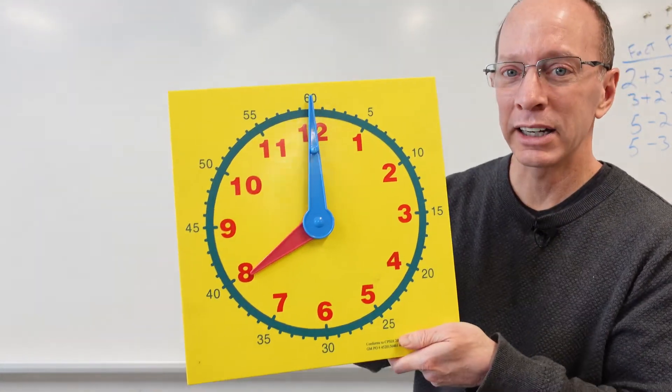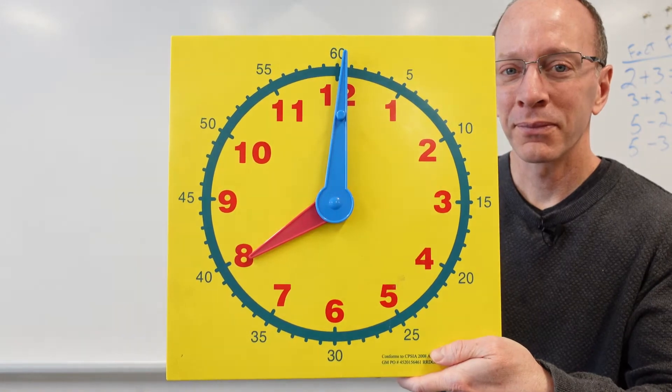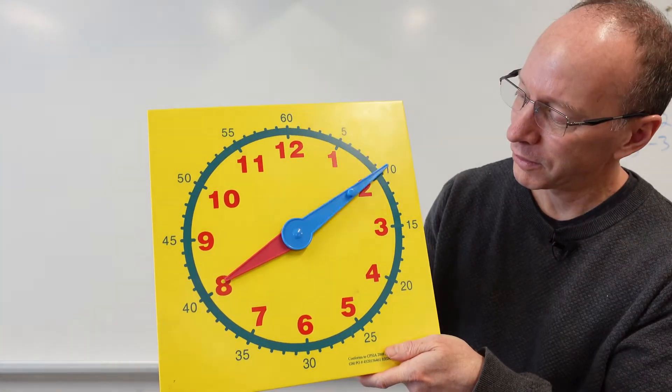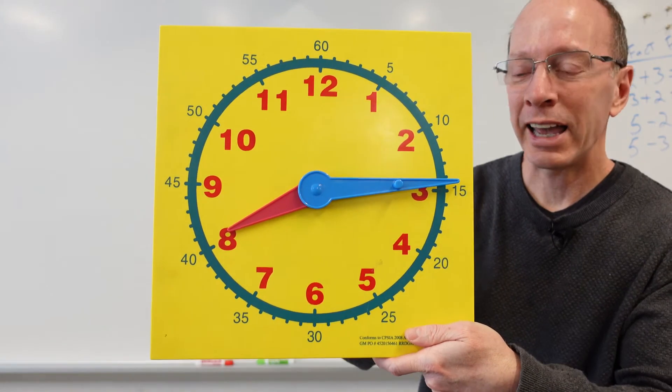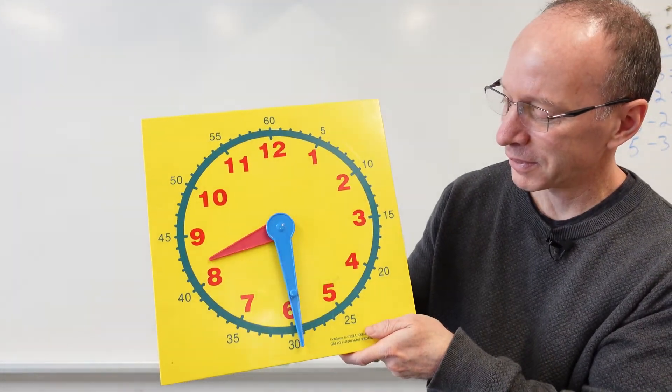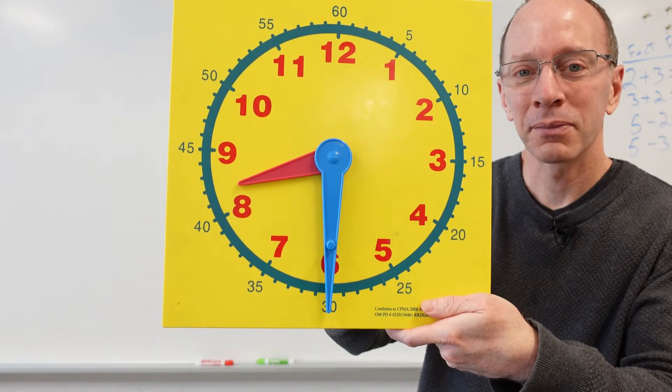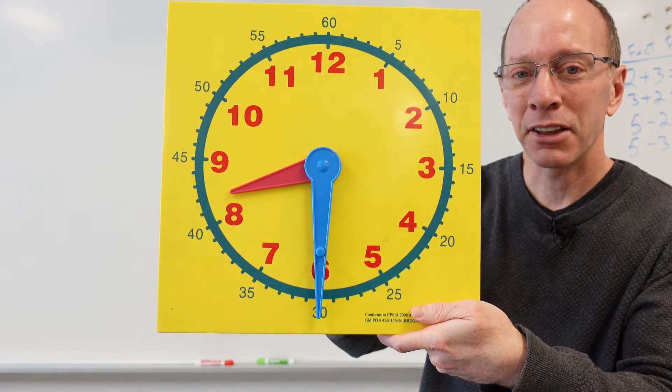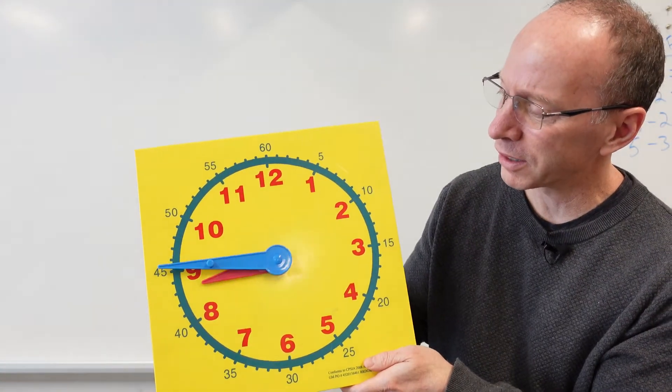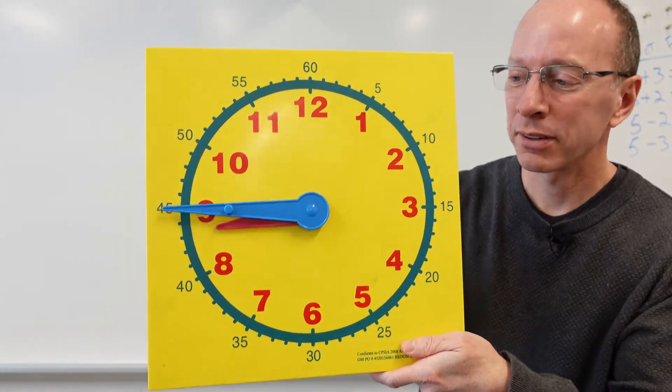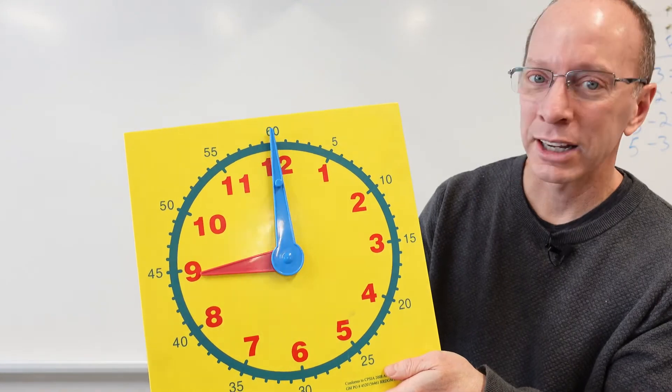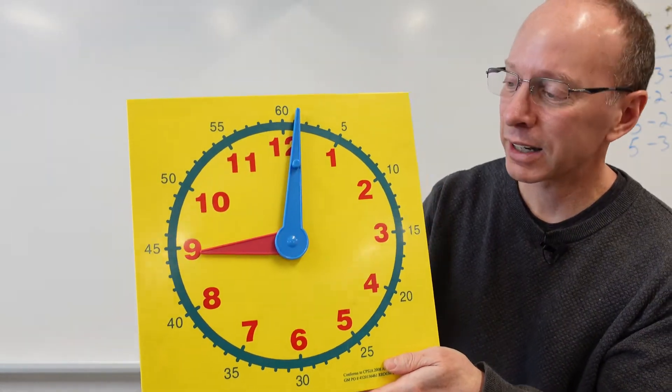All right. What time is it now? 8 o'clock. What time is it now? 8:15. What about now? 8:30. Oh, you guys are doing really good. What about now? 8:45. And then it goes back up to 9 o'clock.